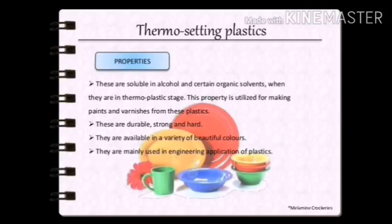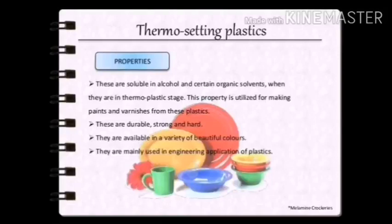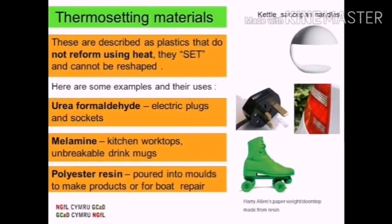Properties of thermosetting plastics: they are soluble in alcohol and certain organic solvents when in the thermoplastic stage — this property is used for making paints and varnishes. They are available in a variety of beautiful colours, are durable, strong and hard. Thermosetting plastics do not reform using heat — they set and cannot be reshaped. Examples: urea formaldehyde used in electric plugs and sockets; melamine used in kitchen worktops and unbreakable drink mugs; polyester resin poured into molds for boat repair.